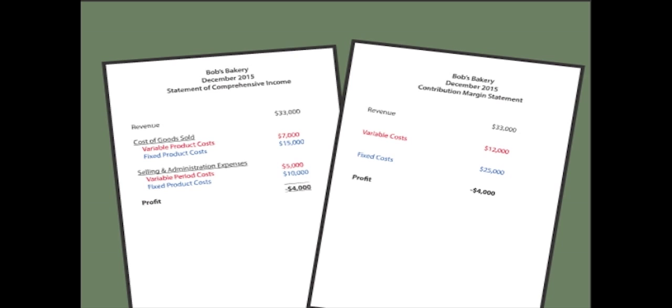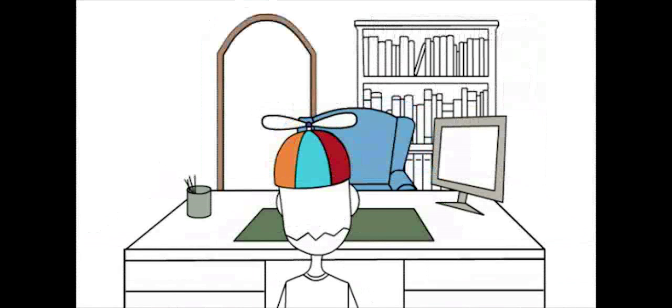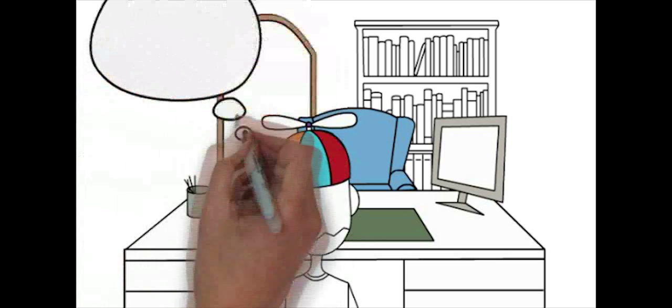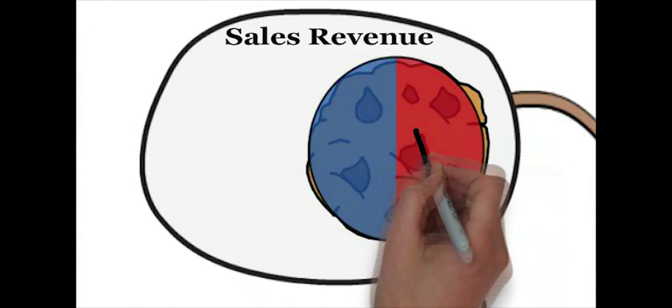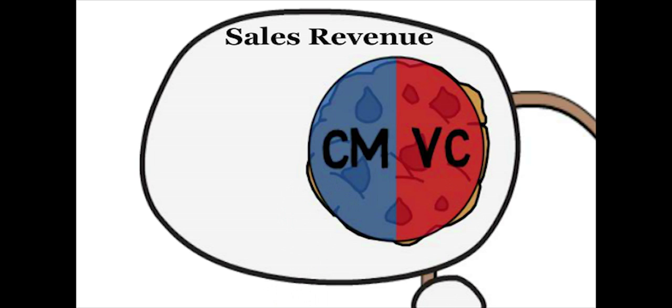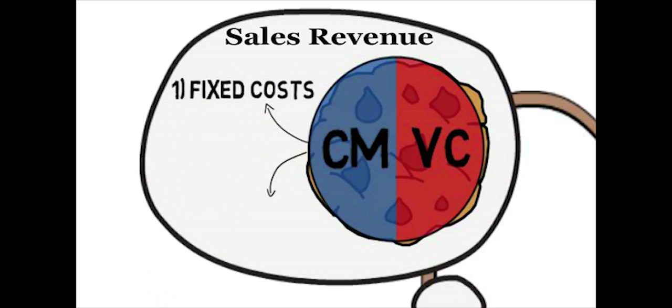Despite having increased sales, Bob is actually operating at a loss but has a positive contribution margin. The contribution margin is the difference between revenues and variable costs. The contribution margin is essentially the amount that goes to first covering fixed costs. Once fixed costs are covered, the CM goes to profit.